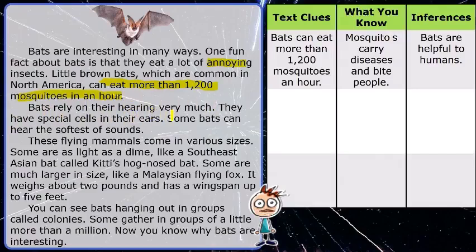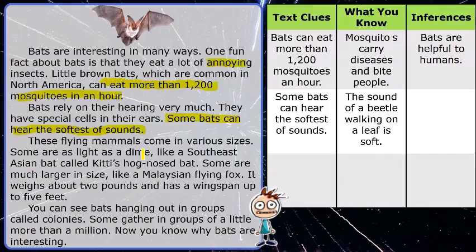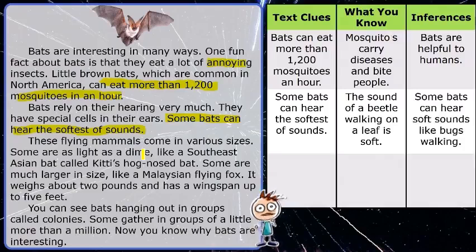Let's keep going. Bats rely on their hearing very much — they have special cells in their ears. Some bats can hear the softest of sounds. That's a nice text clue. Think of something very soft you can hear, then think of something you can't hear. Have you ever heard a beetle walking on a leaf? I can't — but bats, with their special cells, can hear soft sounds like bugs walking.